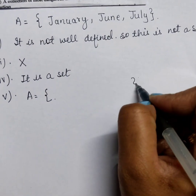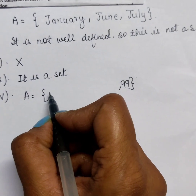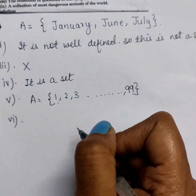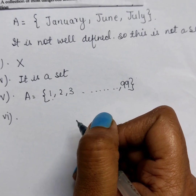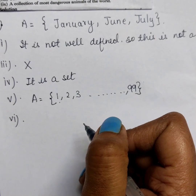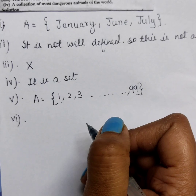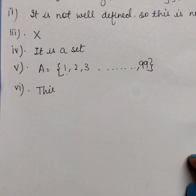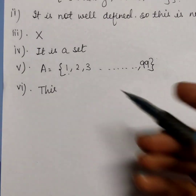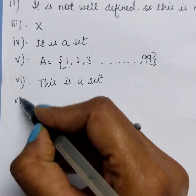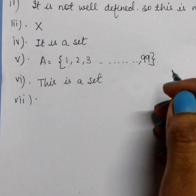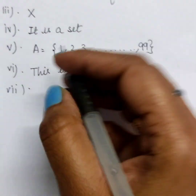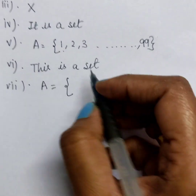It is well-defined so we can write 1, 2, 3 and it goes up to 99. The sixth question: a collection of novels written by the writer Munshi Premchandra. Many novels have been written by Munshi Premchandra, so it is a set because it is well-defined. If they had said 'famous novels' that would not be a set, but since they said Munshi Premchandra specifically, this is a set. The seventh question: the collection of all even integers — this is also a set.